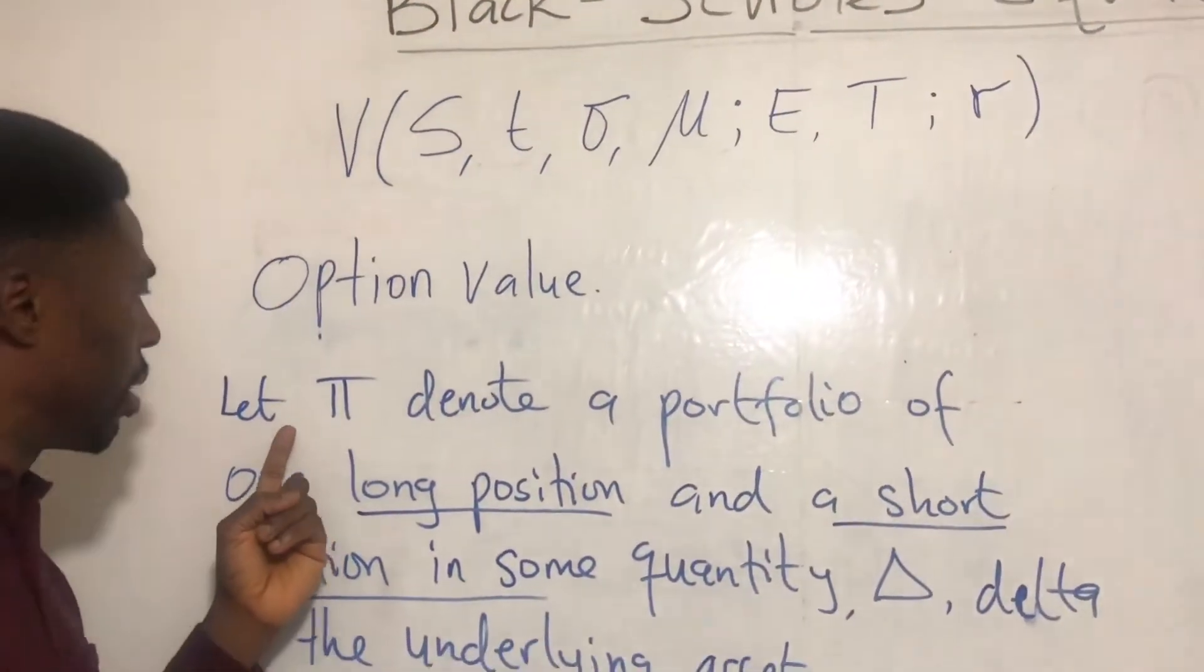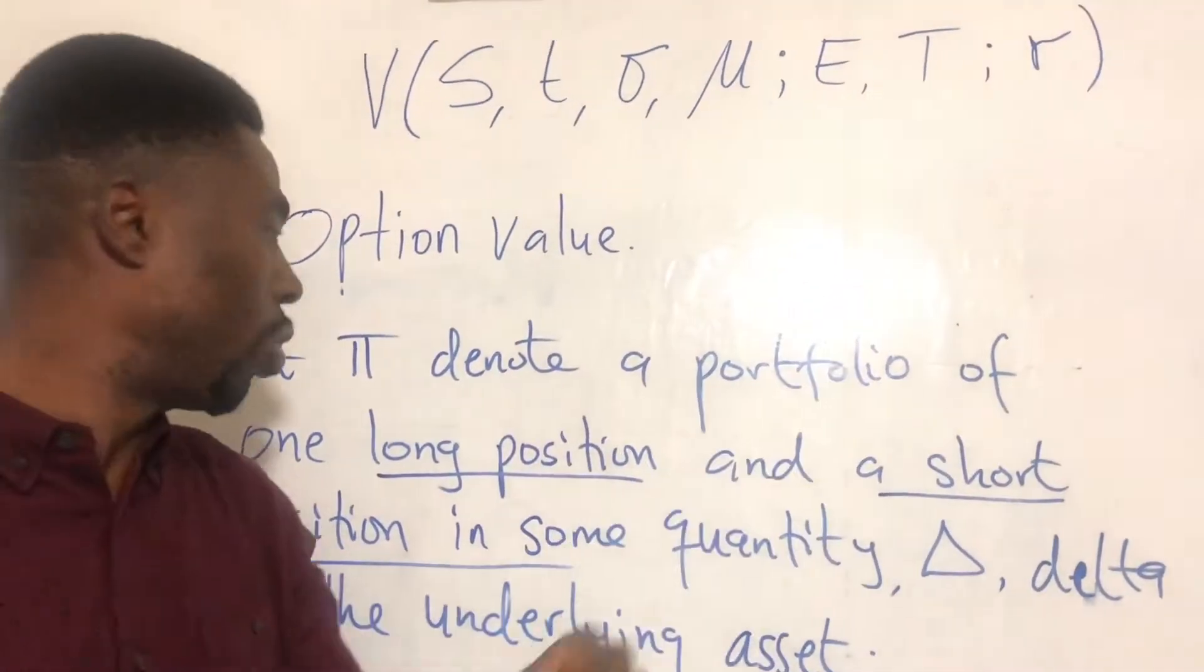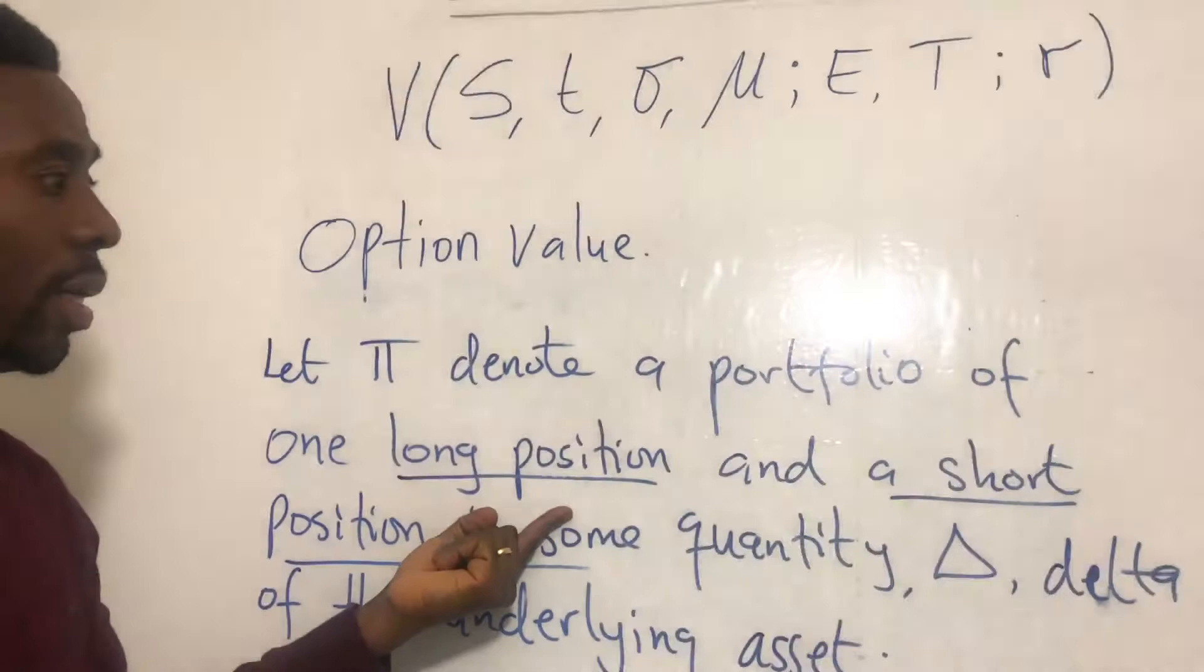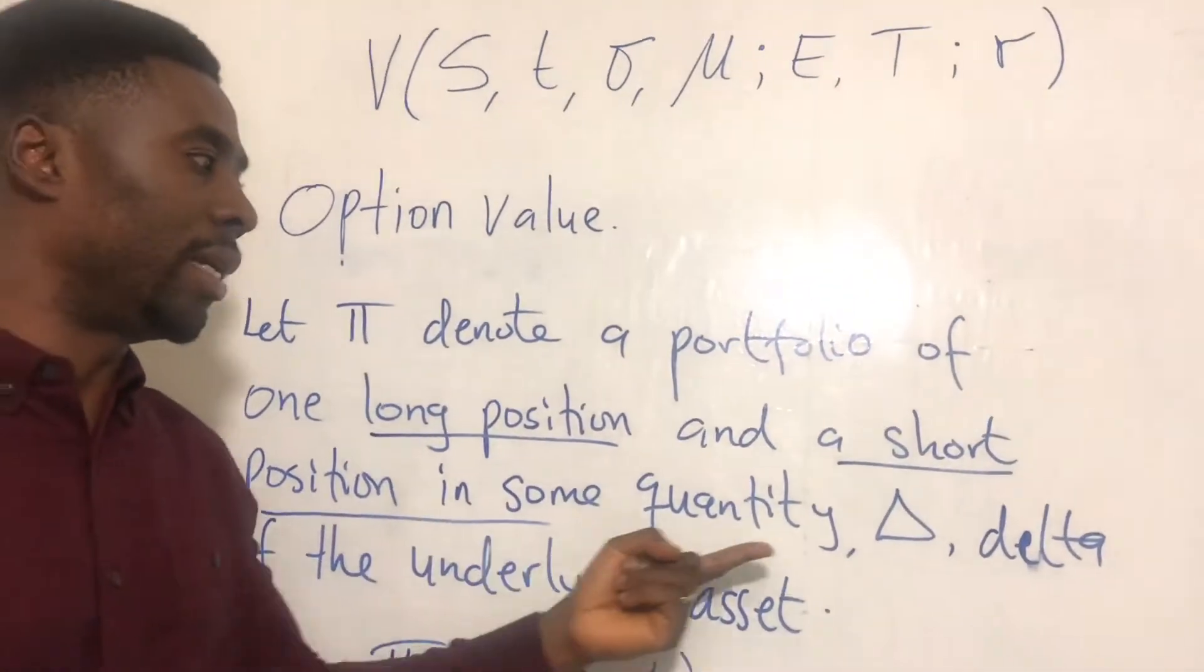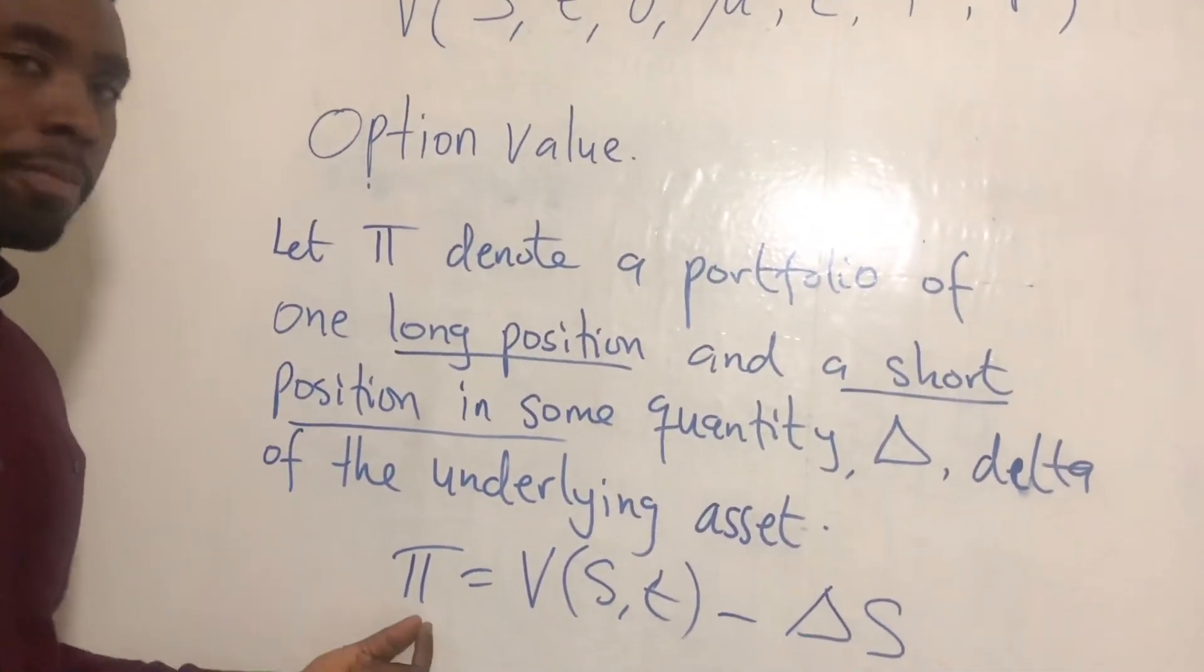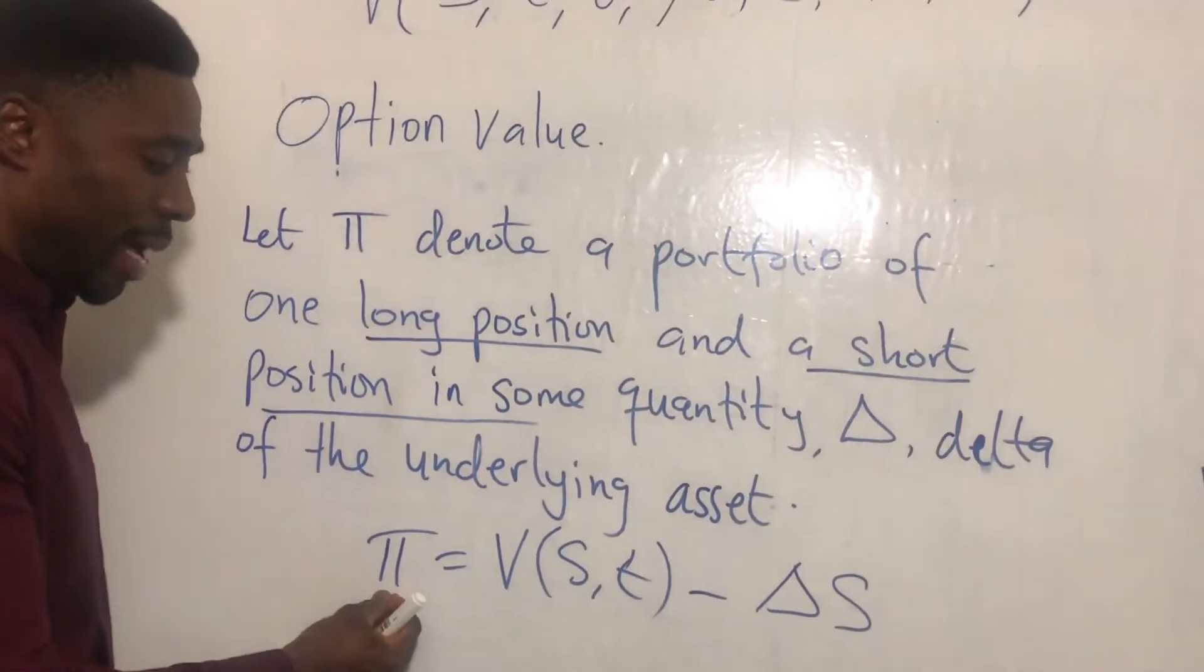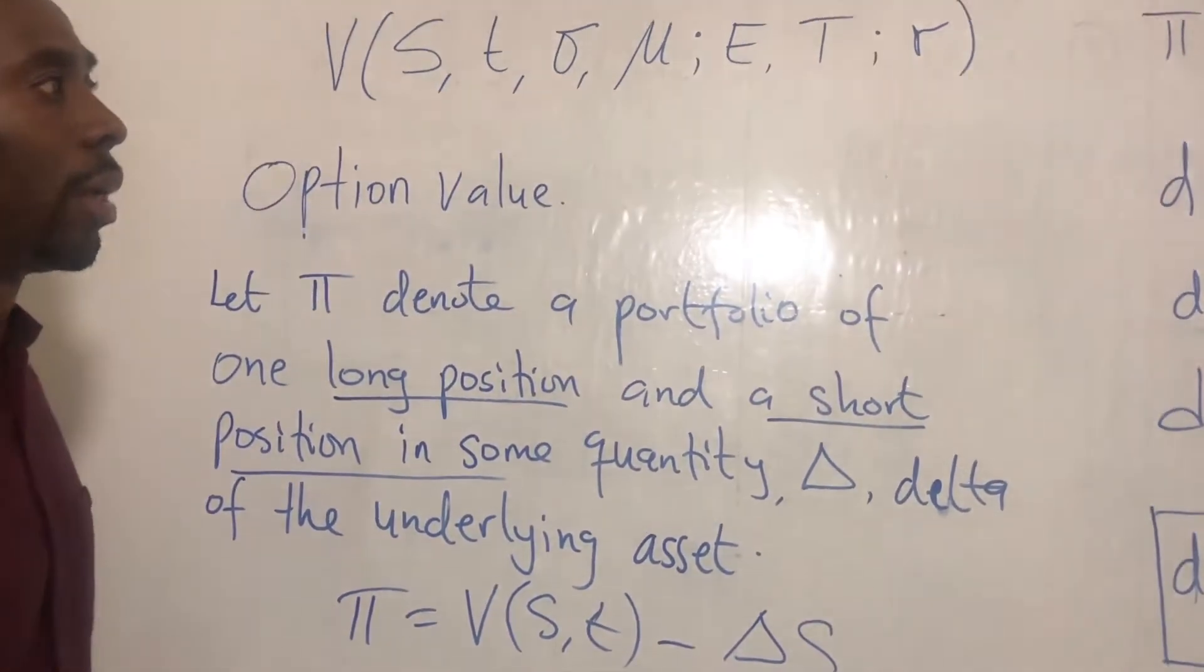So we begin by setting a portfolio, and we let π denote a portfolio of one long position and a short position in some quantity delta of the underlying asset. So mathematically speaking, our portfolio π is giving us V(S,T) minus delta S.